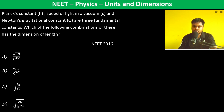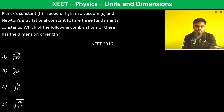Newton's gravitational constant G are the three fundamental constants. Which of the following combinations of these has the dimension of length? So Planck's constant: we have hc by lambda as energy, this is the energy of a photon which is in joules.